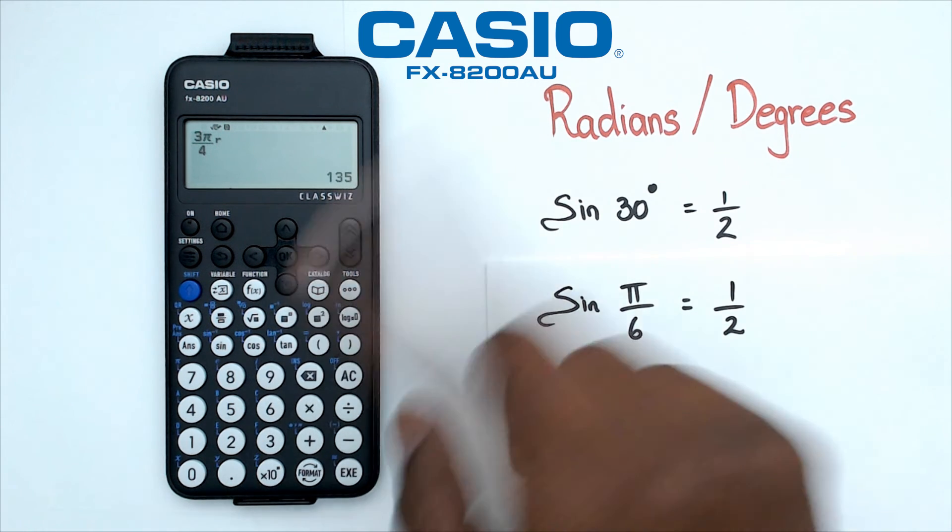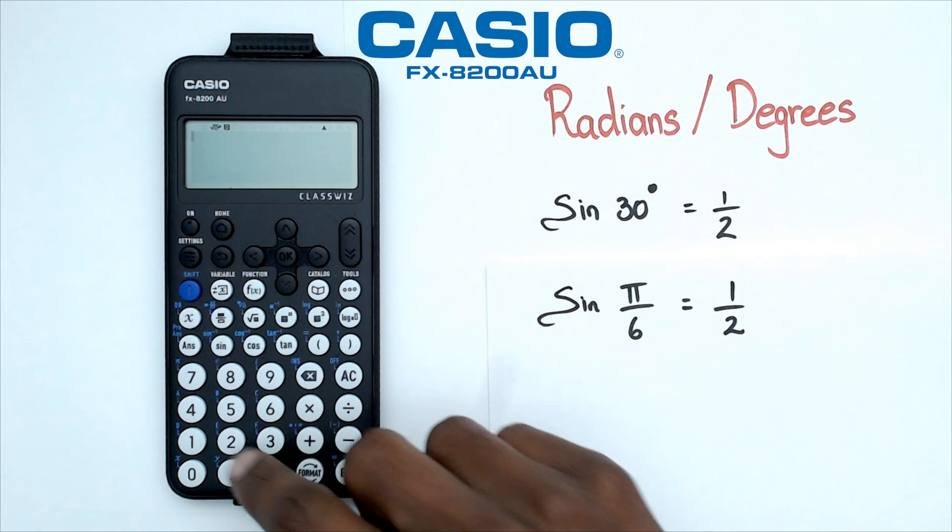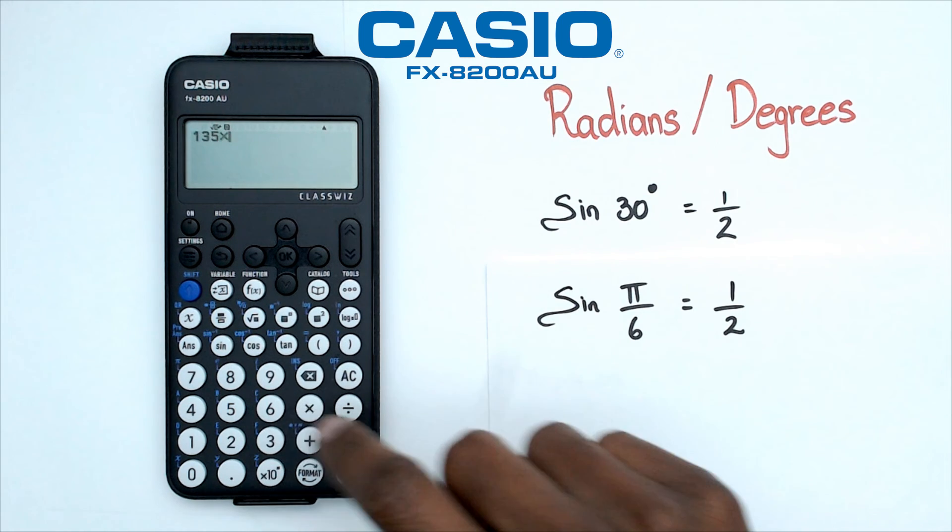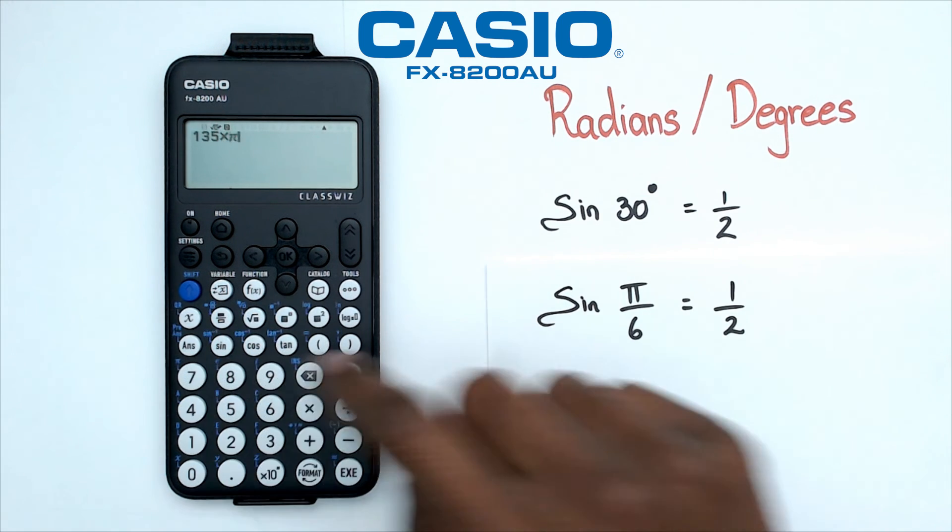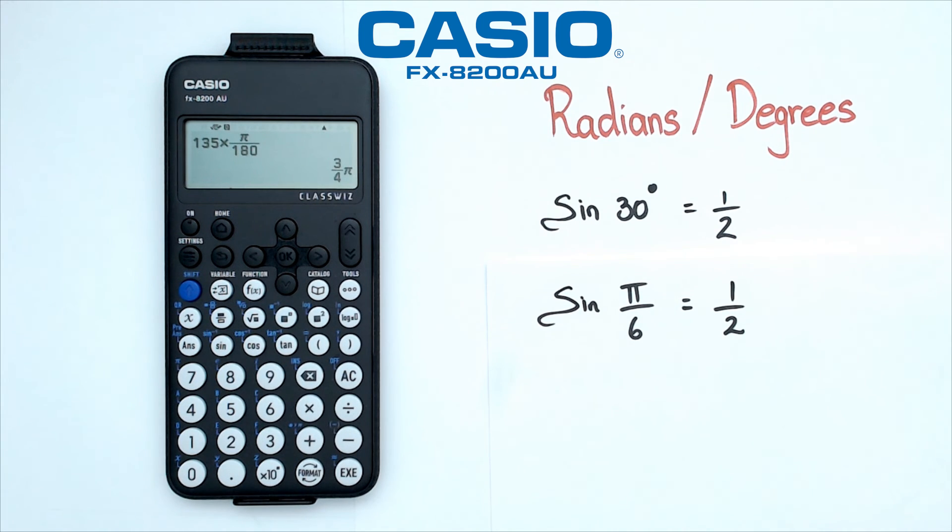Now I still haven't figured out how to go from degrees to radians to see if there's a button here, but of course while we're at it, if you do want to change degrees to radians, all you got to do is 135 multiplied by pi over 180, and that gives you 3 pi over 4.